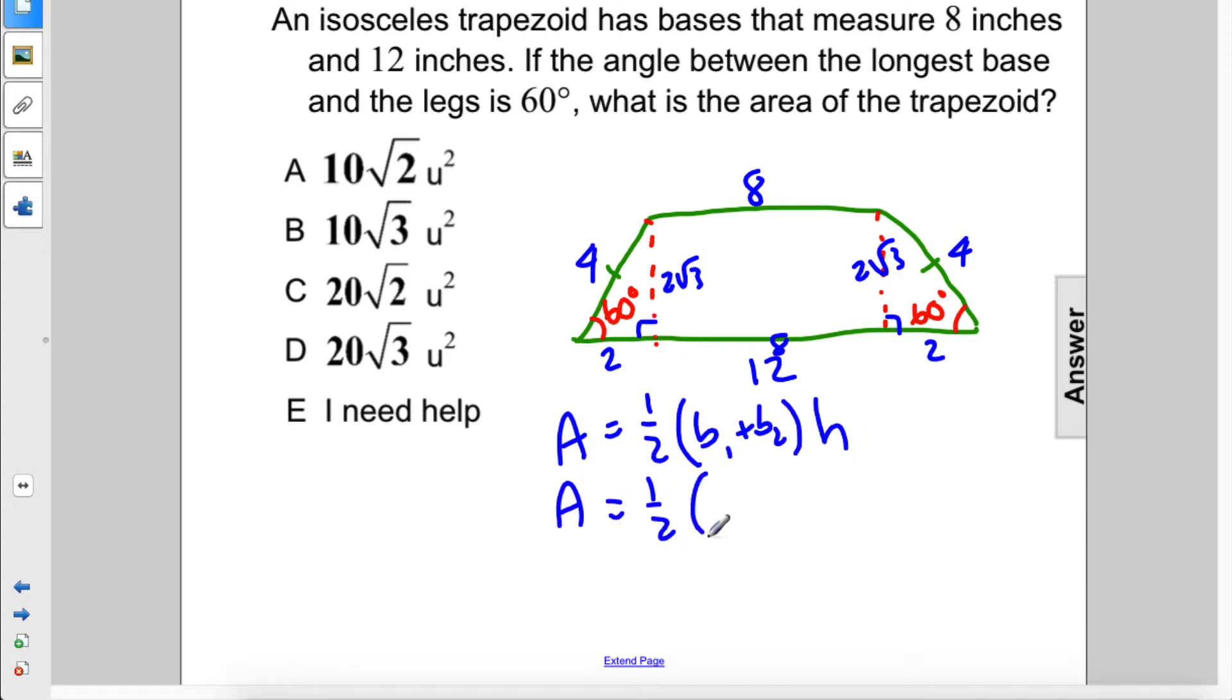So area equals 1/2, base 1 is 8, base 2 is 12, times 2√3. Alright, so this 2 cancels out with this half, so we just have area equals 20√3. So the answer is D.